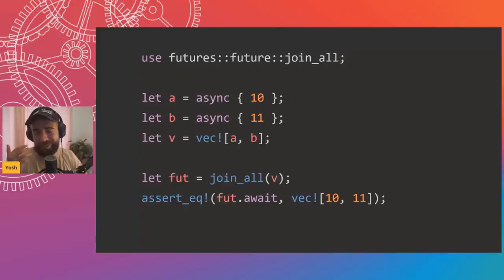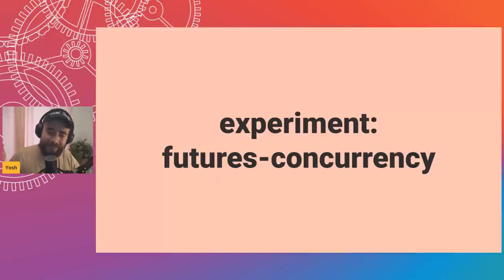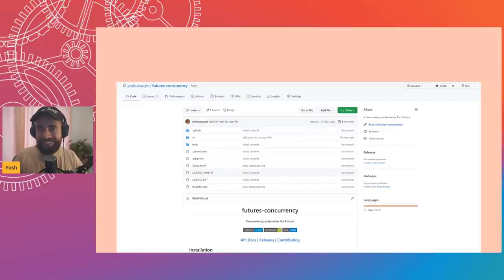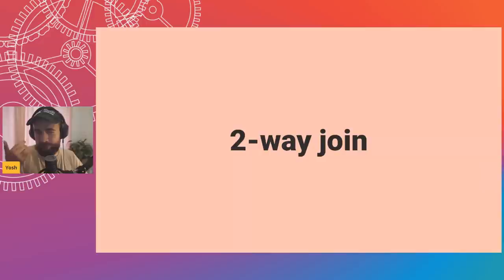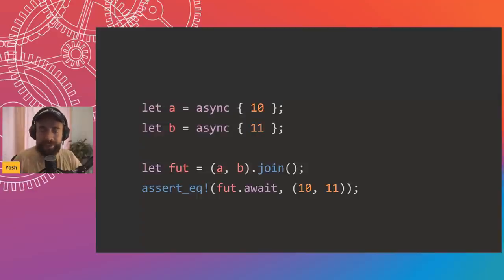So I set out to ask: can we unify this? I've been thinking about it for a couple of years, wrote some blog posts, and came up with an experiment called futures-concurrency — a library you can use today. It has about eight commits, so don't expect too much. But I want to show the direction we could be taking. With futures-concurrency, a two-way join looks like: (a, b).join() — and the output type is (10, 11).